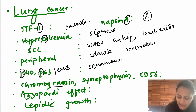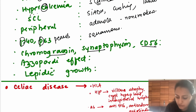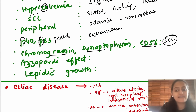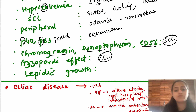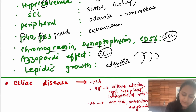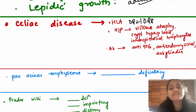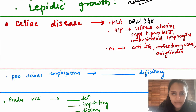Chromogranin, synaptophysin, and CD56 are positive in small cell lung cancer (neuroendocrine markers). Azzopardi effect and lepidic growth pattern are features of small cell and adenocarcinoma respectively — lepidic growth is growth along the alveoli. Celiac disease is associated with HLA-DQ2 and HLA-DQ8; remember 2 and 8 — gluten-free diet should be followed.